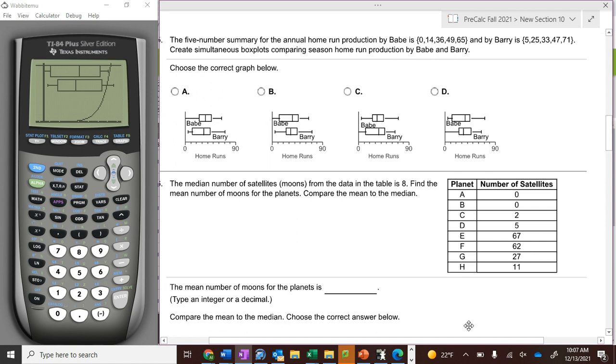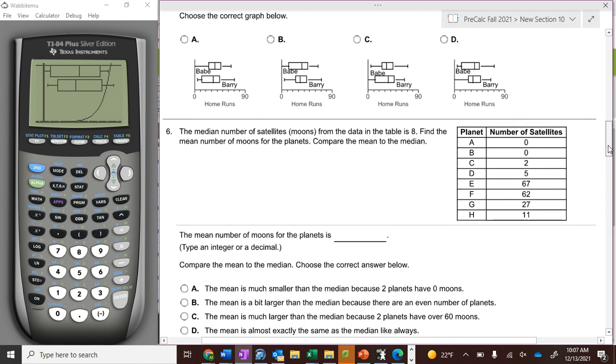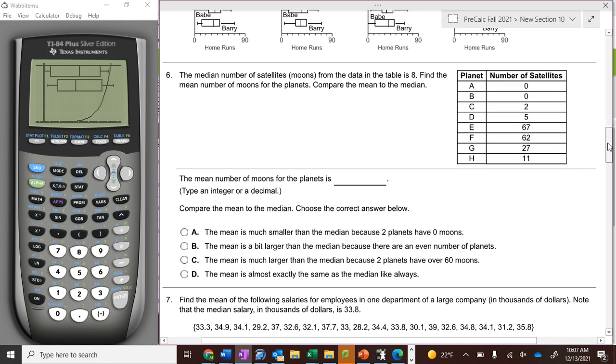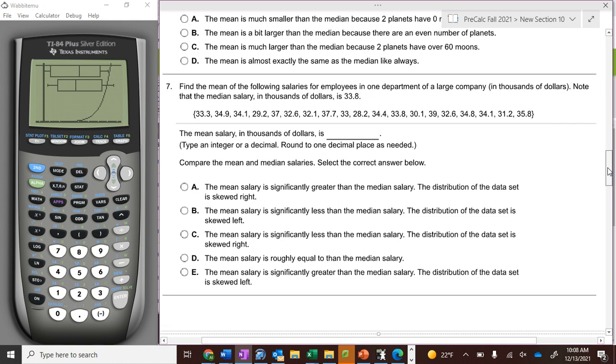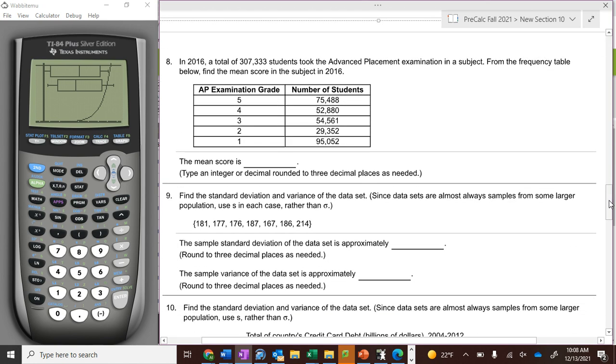Number six, the median number of satellites or moons in this table—find out the number of moons. You can figure out six by yourself, just put them in, find the median, it's easy. So you can figure out six and seven on your own.